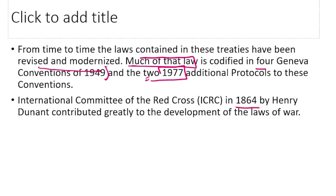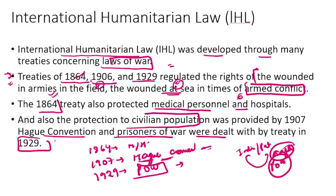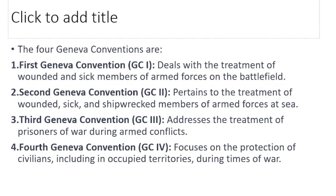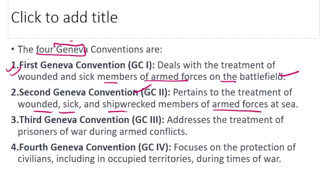The International Committee of the Red Cross was established in 1864 by Henry Dunant and contributed greatly to the development of laws of war. All these laws and treaties were finally codified into the four Geneva Conventions of 1949 and two protocols of 1977. Geneva Convention 1 deals with treatment of wounded and sick members of armed forces on the battlefield. Geneva Convention 2 pertains to wounded, sick, and shipwrecked members of armed forces at sea.